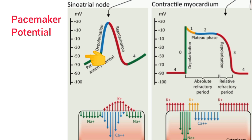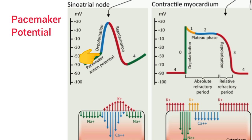The resting membrane potential is not stable in the SA node. To start with, sodium ions leak into the pacemaker fibers and cause slow depolarization. This slow depolarization forms the initial phase of pacemaker potential. Then the calcium channels start opening, and there is a slow influx of calcium ions causing further depolarization at the same slower rate, forming the later phase of pacemaker potential. Thus, the initial phase is due to the slow influx of sodium ions, and the later phase is due to the slow influx of calcium ions.